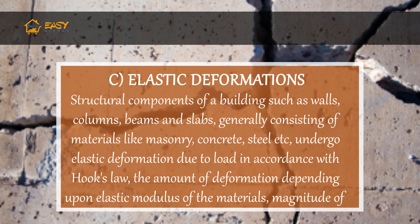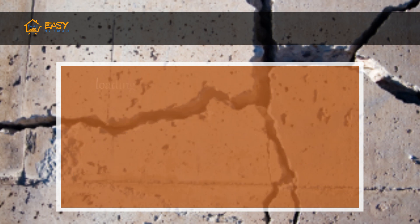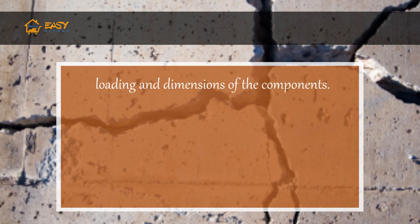Elastic deformations: structural components of a building such as walls, columns, beams, and slabs, generally consisting of materials like masonry, concrete, and steel, undergo elastic deformation due to load in accordance with Hooke's Law. The amount of deformation depends upon the elastic modulus of the materials, magnitude of loading, and dimensions of the components.